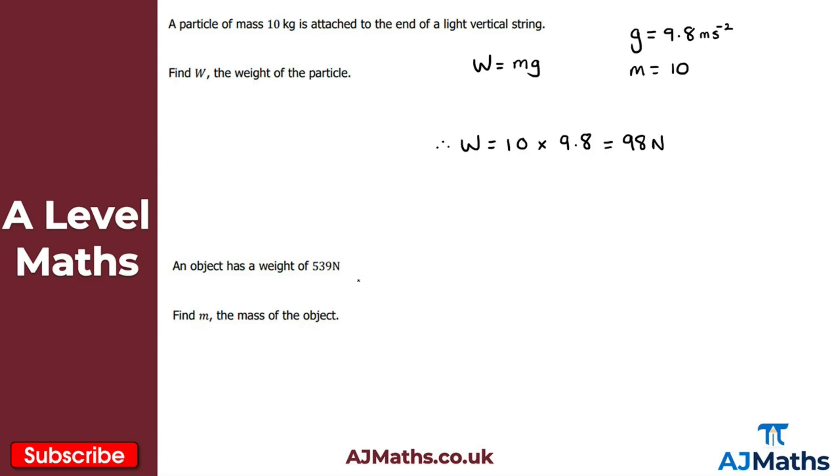And then for the second question here we're told an object has a weight of 539 newtons. We're asked to find m the mass of the object. Again we're just using this formula here. So W is equal to mg. W here is the weight so that's going to be 539. And that's equal to mg. Well we're trying to find m here. So that's m times g. But we do know g. g is 9.8 meters per second per second.